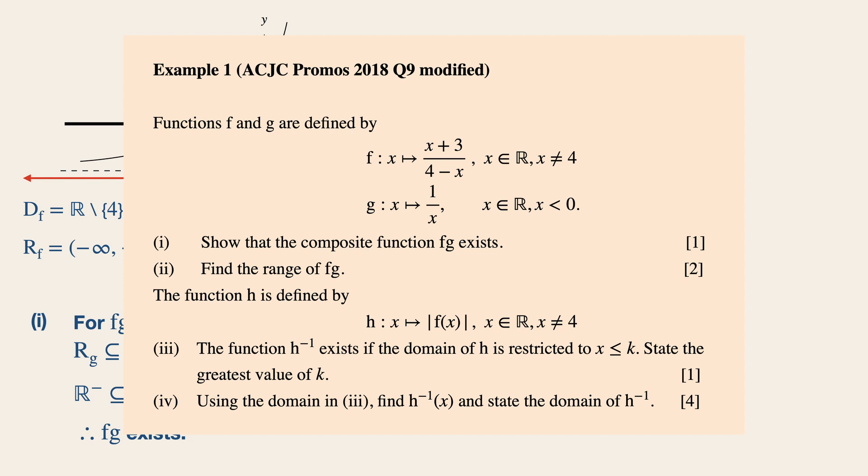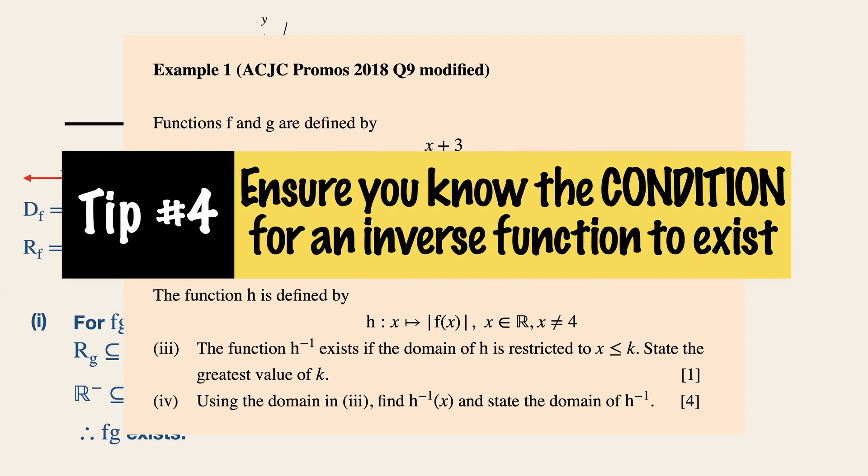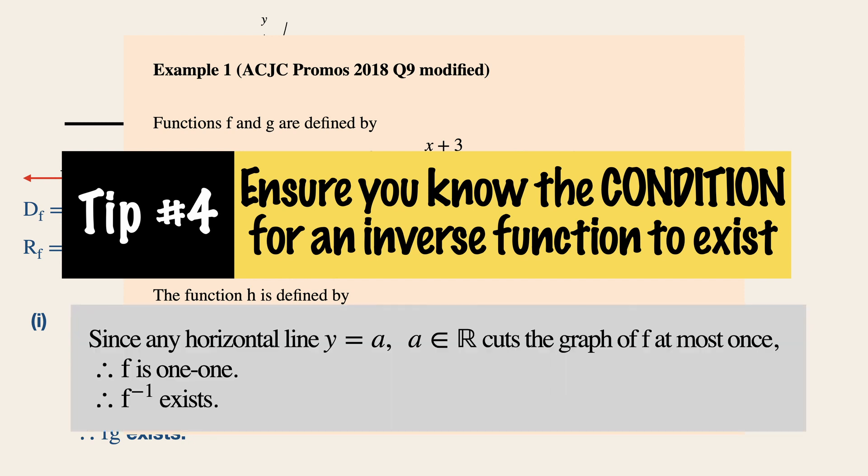Moving on to tip number four, it deals with inverse functions. Make sure you know the conditions for an inverse function to exist, which is for every horizontal line where y equals a, where a is a real number, it cuts the graph at most once. So a one to one function will ensure that inverse function will exist.